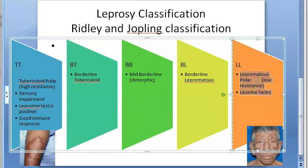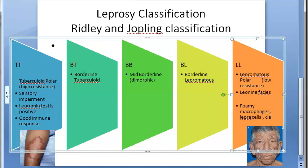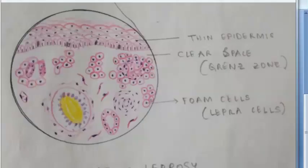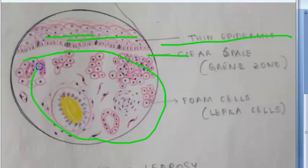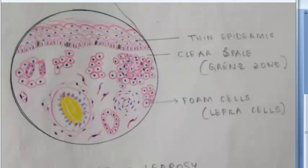In lepromatous leprosy histopathology, you will see foamy macrophages called lepra cells, and a clear zone called the grenz zone, where the dermis is separated from the epidermis. Looking at the diagram: the epidermis is a thin top layer, below which is the grenz zone, and then the dermis. Inside the dermis you can see foam cells — the lepra cells.